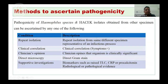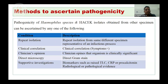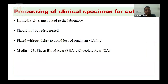Methods to ascertain pathogenicity: repeat isolation from the same or different specimen representative of infectious process, clinical correlation with symptoms, clinician opinion that organism is clinically significant, direct gram stain suggestive of infective etiology, and supportive investigations like biomarkers. For specimen processing, it must be immediately transported to the laboratory, never refrigerated, and plated without delay to avoid loss of organism viability. Recommended media are 5% sheep blood agar and chocolate agar.